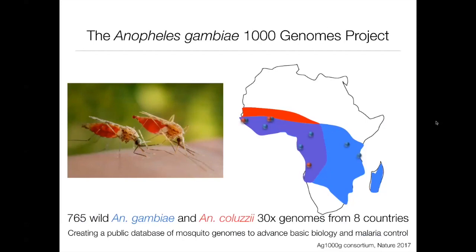To understand the variation that exists within a single species genetically, a couple of years ago we published a first glimpse looking at 765 wild-caught mosquitoes using Illumina sequencing at 30X coverage per sample. These mosquitoes were collected from all over Africa, shown as dots on a map. The red dots are Anopheles coluzii — we didn't sequence quite as many of those — which is the sister species but also a major vector alongside Anopheles gambiae.